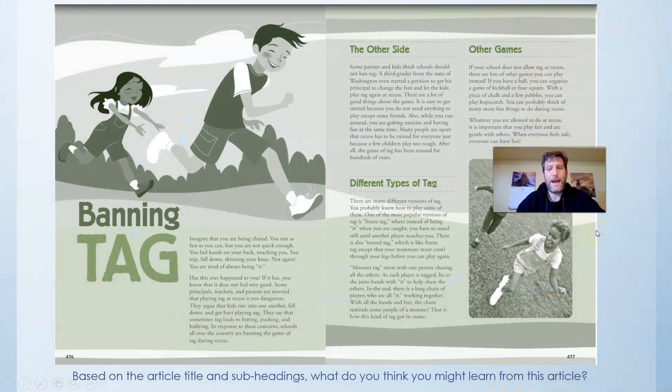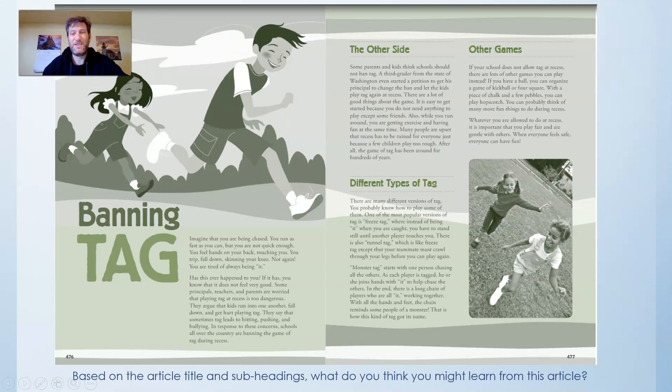The article we're going to be reading today is called Banning Tag. To ban means you disallow something — if something is banned, it's not allowed anymore. Based on the article and subheadings, what do you think you might learn from this article? There's the title Banning Tag, the subheading The Other Side, Different Types of Tag, and Other Games. What do you think you might learn from this article?